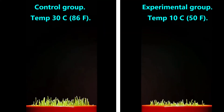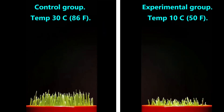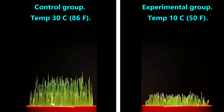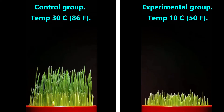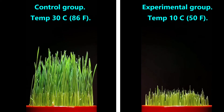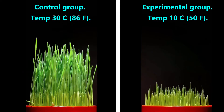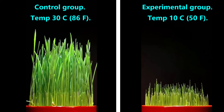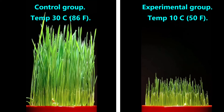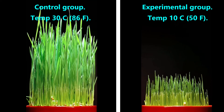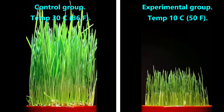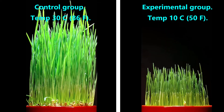In the test step, we run the experiment. We have two groups of grass: one is called the control group and the other is called the experimental group. Both groups have the same type of grass and get the same amount of light and water, but the control group's temperature will be kept at 30 degrees Celsius, whereas the experimental group's temperature will be kept at 10 degrees Celsius. At the end of four weeks, we measure the average height and find it is 40 centimeters for the control group and 20 centimeters for the experimental group.